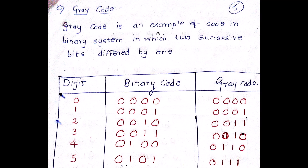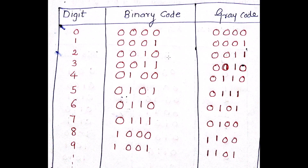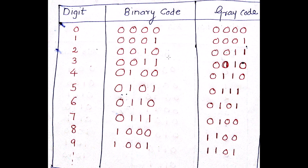Gray code is an example of a binary system in which two successive values differ by only one bit. Every next Gray code differs from its previous Gray code by just one bit.